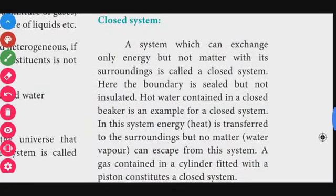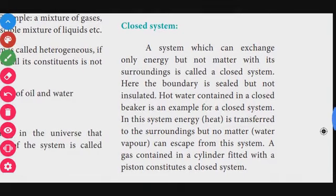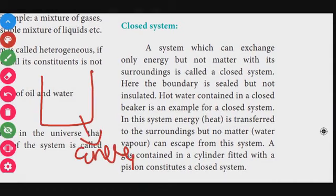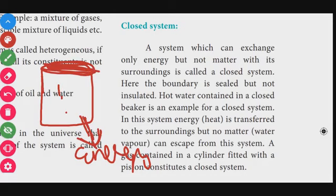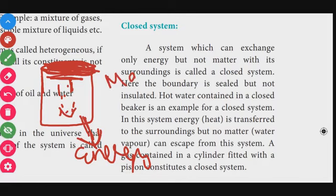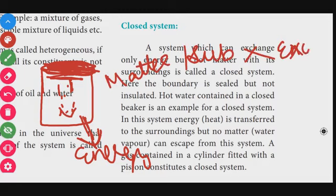A closed system can exchange only energy but not matter. The boundary is sealed but not insulated. For example, hot water in a closed beaker: heat is transferred to the surroundings, but no matter — no water vapor — can escape. A gas contained in a cylinder fitted with a piston constitutes a closed system. The gas value stays inside, but some energy is lost through the piston.